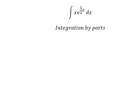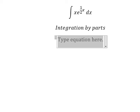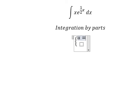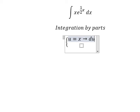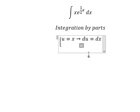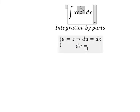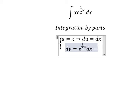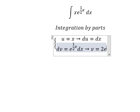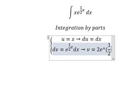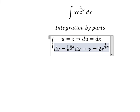I will set u equals to x, and then we differentiate both sides. We have du equals to dx. For dv, that is this one, so the integration of this one gives us v equals to 2e to the power of one over two x.